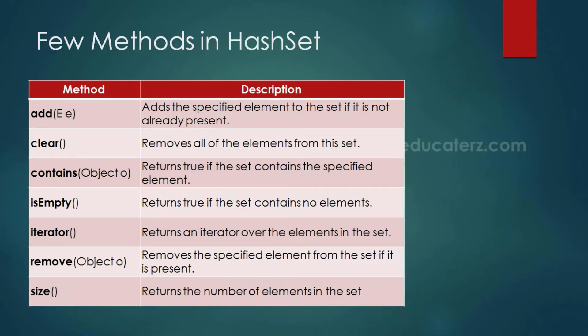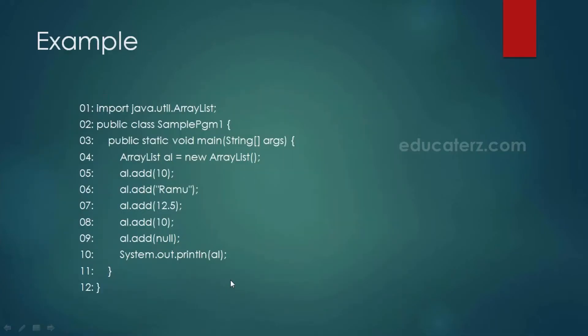For HashSet, methods include add(), clear(), contains(), isEmpty(), and iterator(). We use iterator for traversing through a collection object. remove() removes the specified element from the set, and size() returns the number of elements in the set.